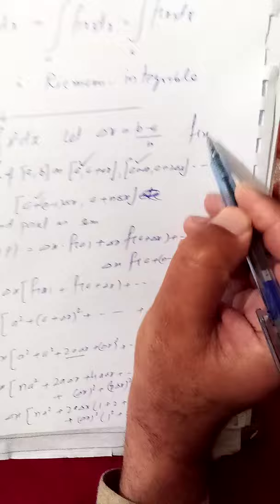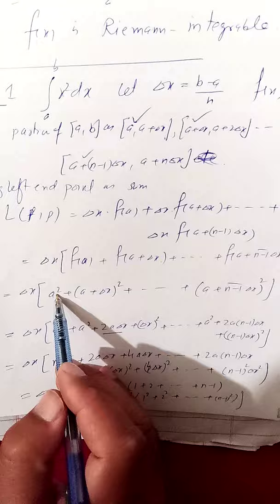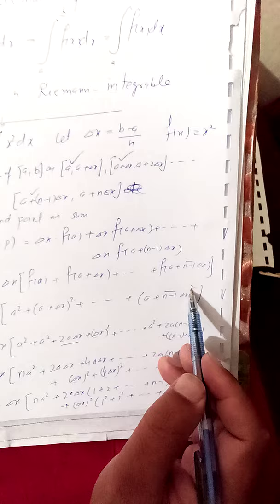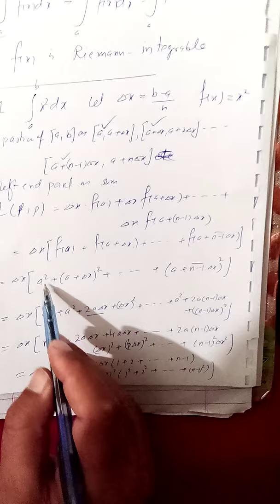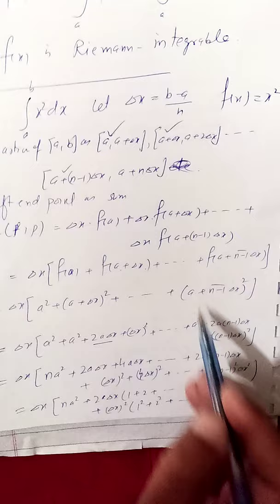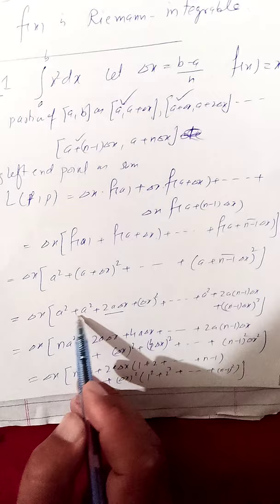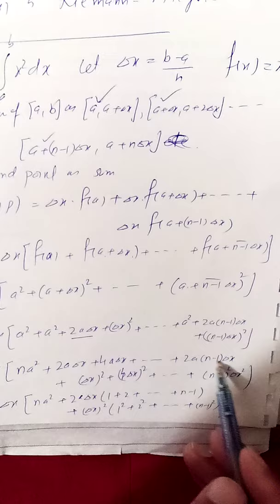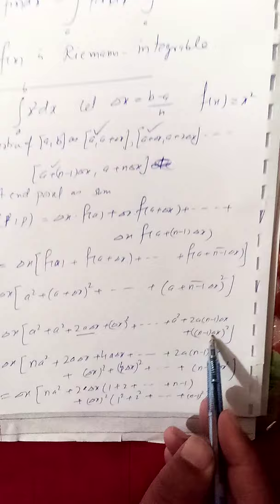Now we know that f(x) equals x², so substituting: f(a) equals a², f(a plus delta x) equals (a plus delta x)², and so on, (a plus (n−1)delta x)². Expanding these squares: a², (a² plus 2a·delta x plus delta x²), and so on. There are n terms of a², so we get n·a², plus 2a·delta x times (1 + 2 + ... + (n−1)), plus delta x² times (1² + 2² + ... + (n−1)²).